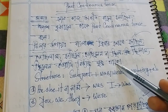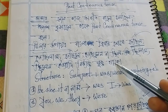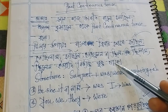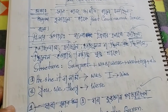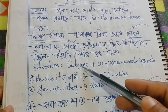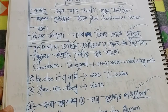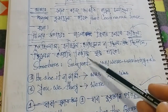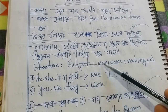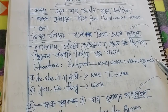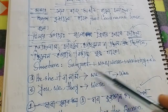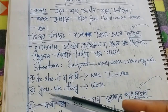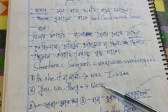If you are a student, you can write the structure and translate it into English and practice it. The structure is: Subject + was / were + verb-ing + object. For he, she, it — use was. For you, we, they — use were.